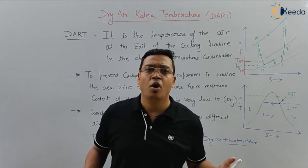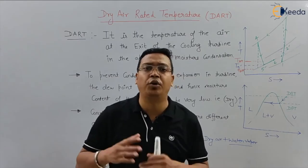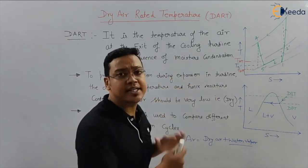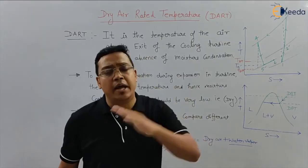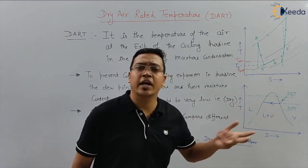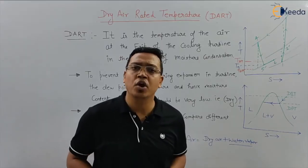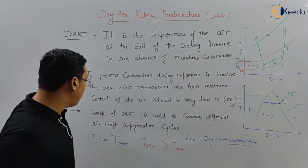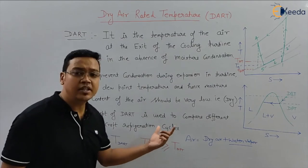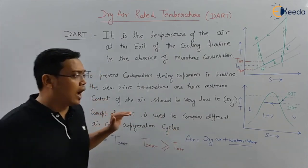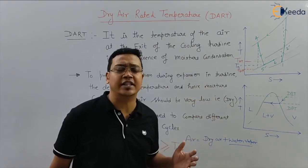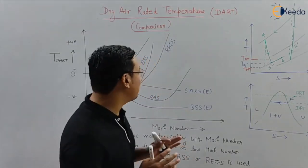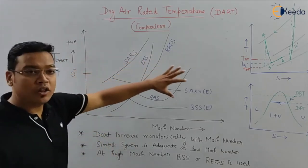In aircraft, PCBs and electronic items require cooling. If moisture enters those systems, the electronic items may get damaged. Also, if moisture is high in the cabin, it is uncomfortable for passengers. So the dew point temperature should be very low to prevent condensation. The concept of DART is used to compare different aircraft refrigeration cycles explained in the previous video.